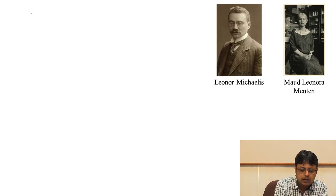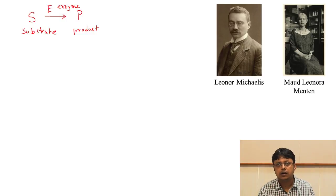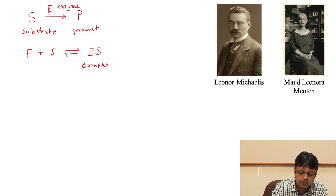The first model for enzyme catalysis was put forward by Michaelis and Menten, who provided a very interesting concept of how the enzyme actually helps in forming a product from a substrate. Consider a substrate S going into product P in the presence of enzyme E. Michaelis and Menten considered a step where the enzyme and substrate bind and unbind together, forming a complex known as the enzyme-substrate complex, which is the intermediate.